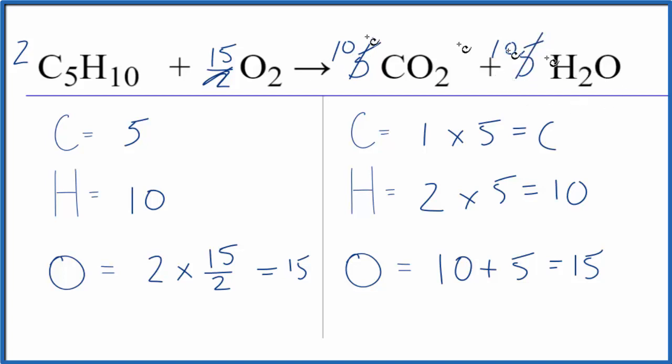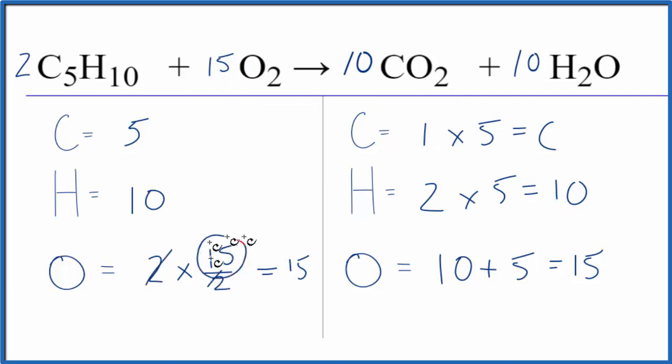Those are the coefficients for this equation, so now they're all whole number coefficients. That's the balanced equation for C5H10 plus O2. A few things to remember: leave the oxygens till last when balancing these combustion reactions since O2 is by itself. You can use a fraction like fifteen over two here since the twos cancel out, and if you need to, double everything to get whole numbers.